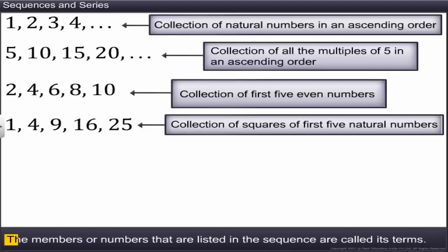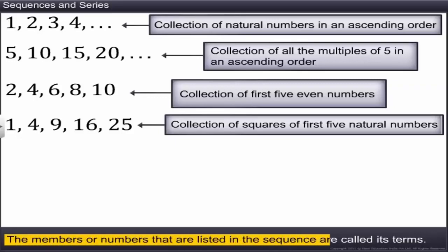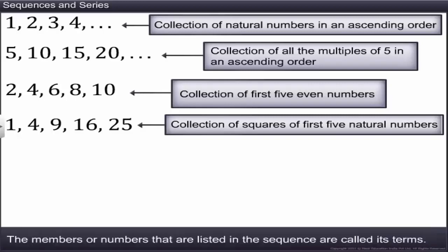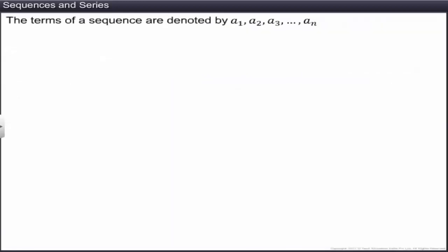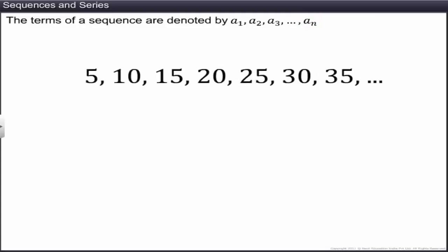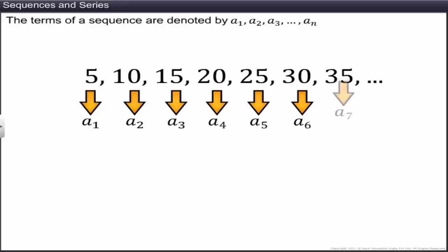The members or numbers that are listed in the sequence are called its terms. The terms of a sequence are denoted by a₁, a₂, a₃, and so on up to aₙ, where a₁ denotes the first term, a₂ the second term, a₃ the third term, and aₙ denotes the nth term. For this sequence, 5 is the first term, 10 is the second term, 15 is the third term, and 35 is the seventh term.